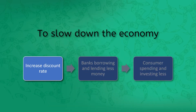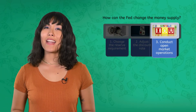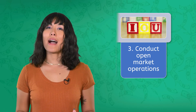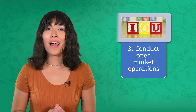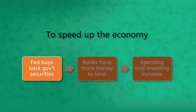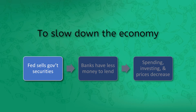To decrease supply and slow down, the Fed can increase the discount rate, making borrowing more expensive and reducing borrowing and spending by consumers and businesses. The final tool is open market operations — the buying and selling of government securities, which are essentially IOUs issued by the government. To increase the money supply, the Fed buys government securities, putting more money in the hands of banks, leading to more lending and spending. To decrease supply, the Fed sells government securities, taking money out of the banking system.